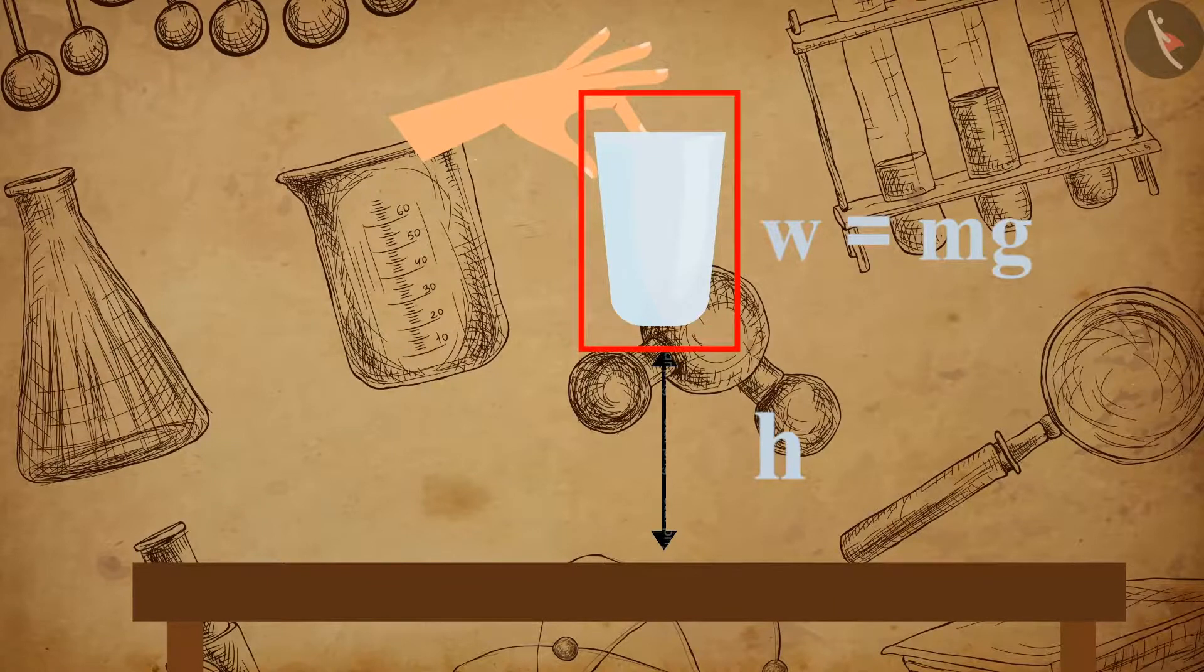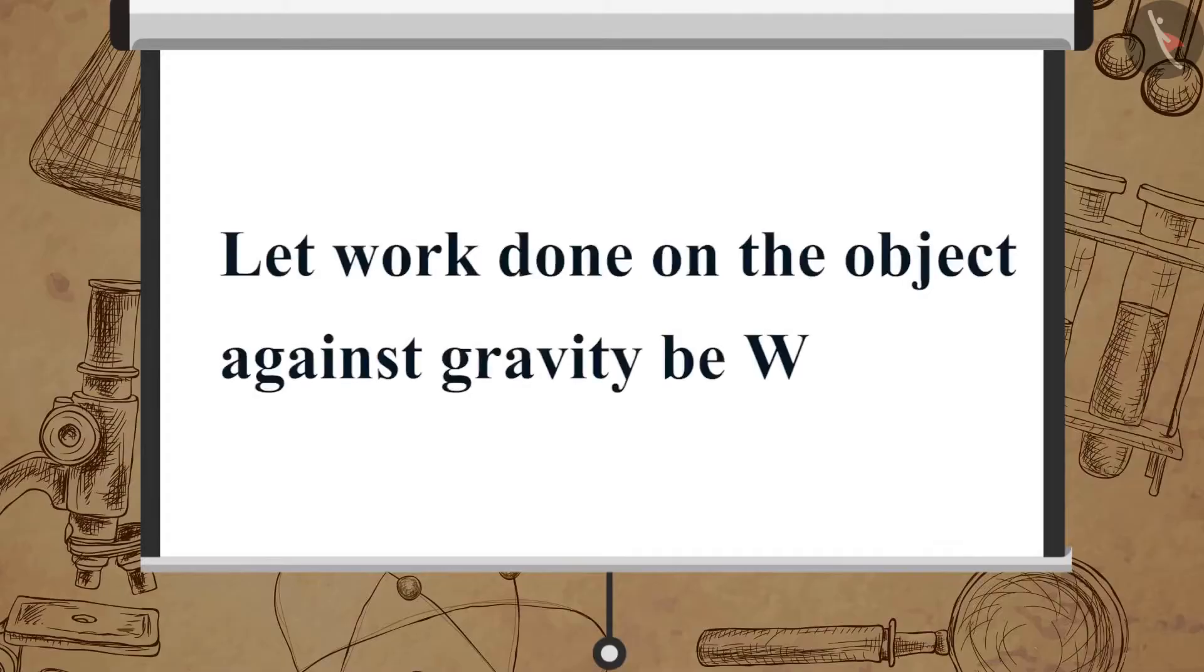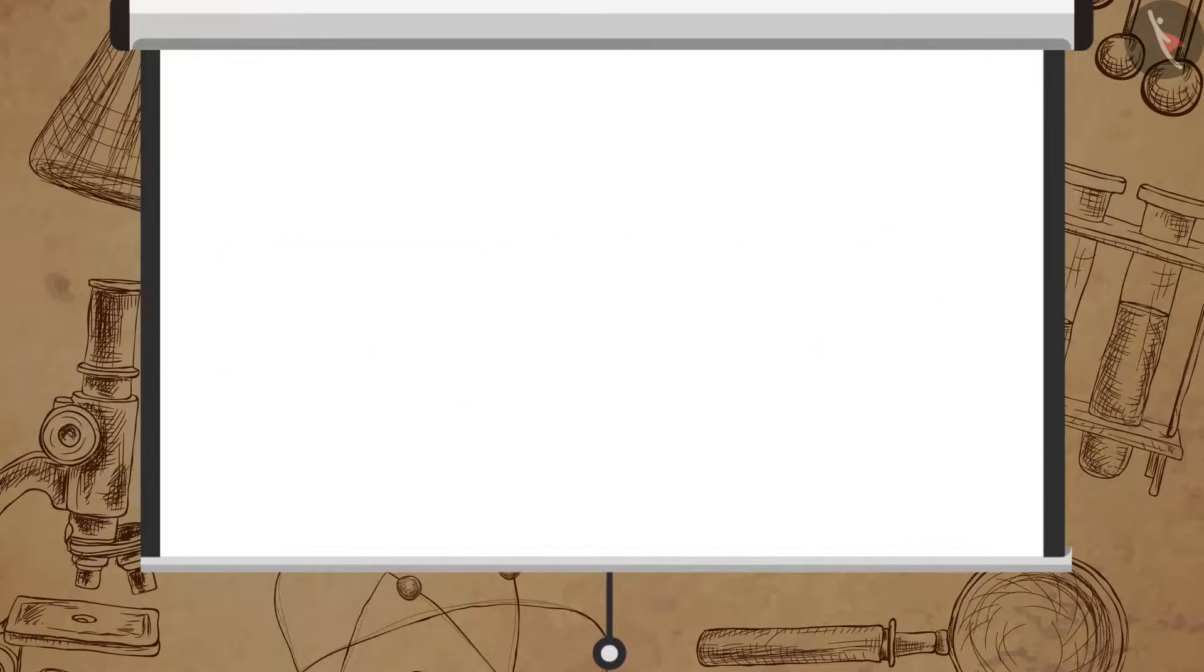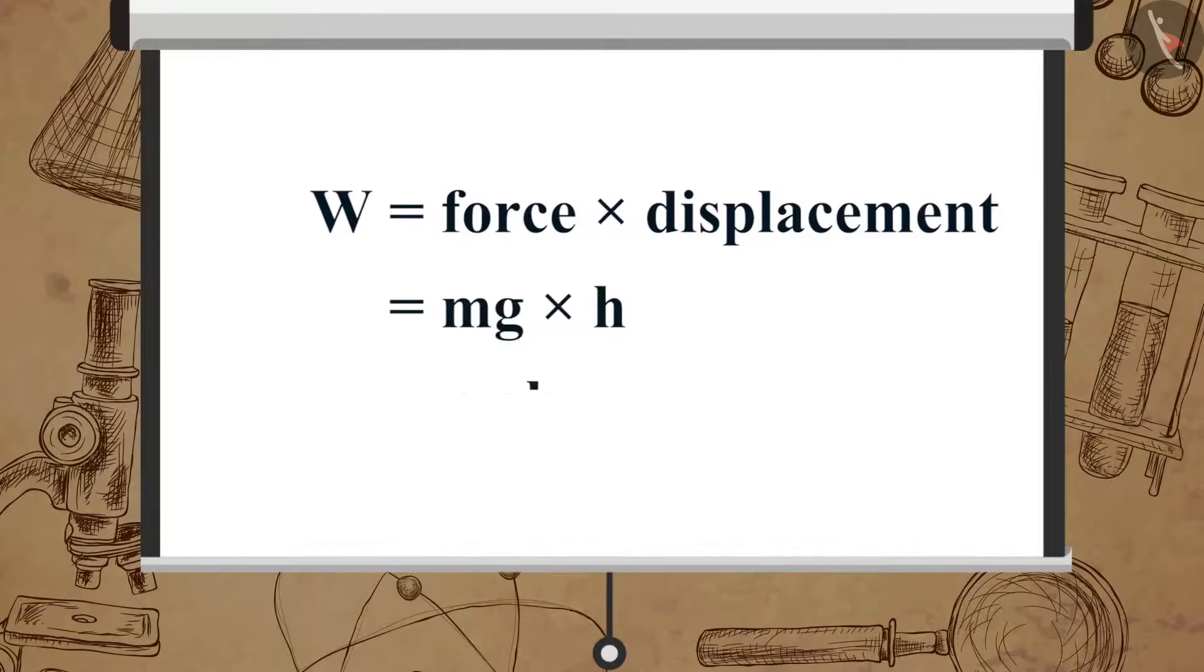The energy gained by the object is the work done on it. Let work done on the object against gravity be W. W is equal to force multiplied by displacement, which is equal to Mg multiplied by H, which is equal to Mgh.